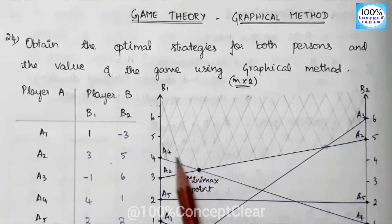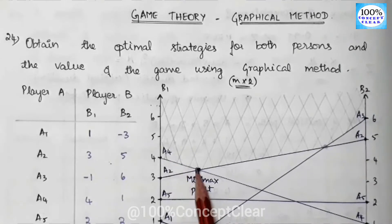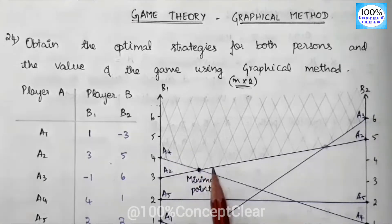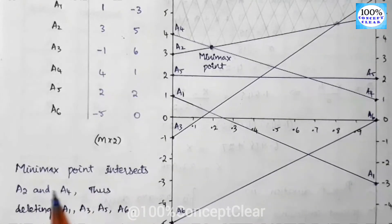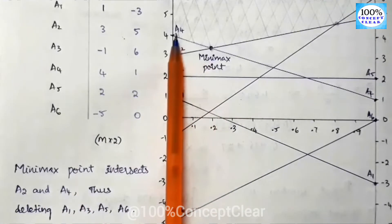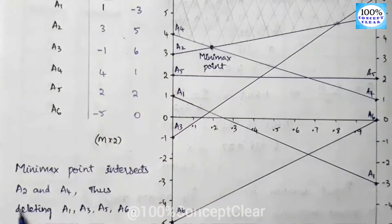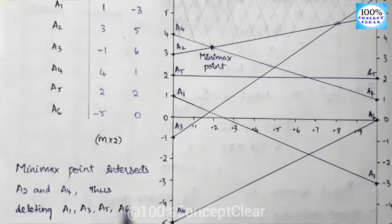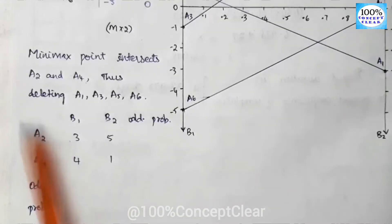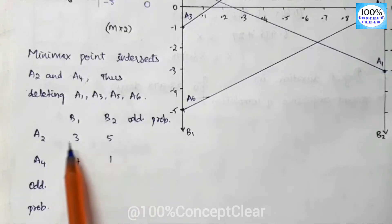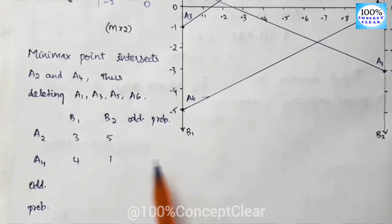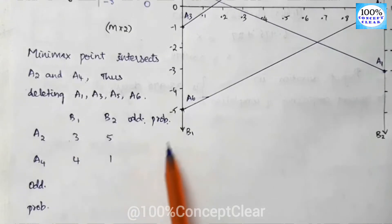We will choose A2 and A4 as the balance strategies. The minimax point intersects A2 and A4, so we are deleting A1, A3, A5, and A6 — we are removing all other strategies. We now have A2 and A4, and we need to write their values.